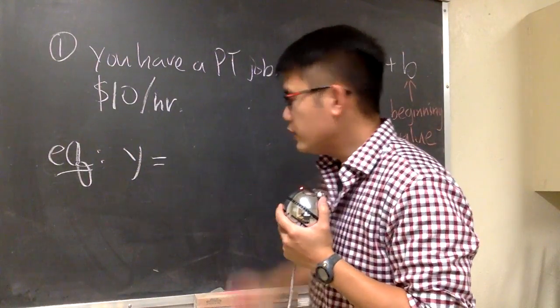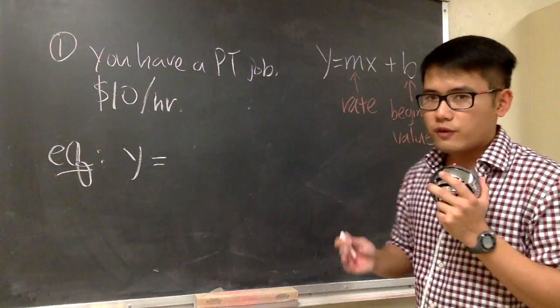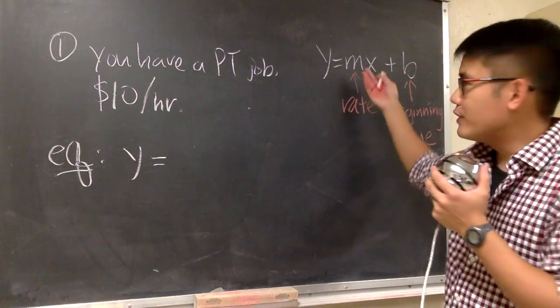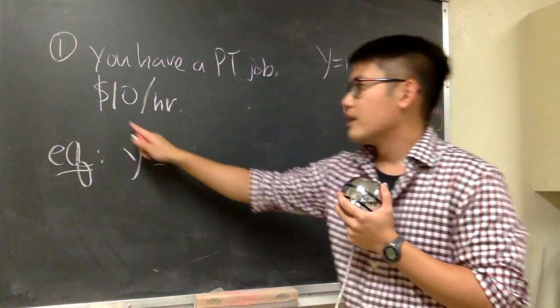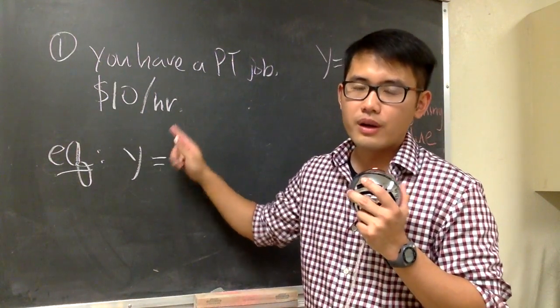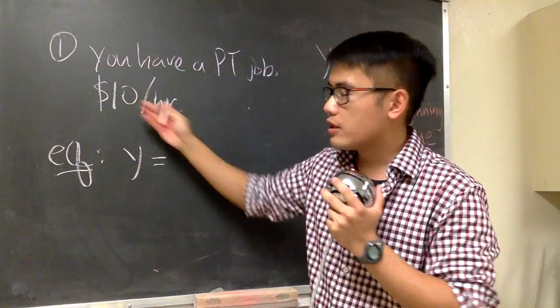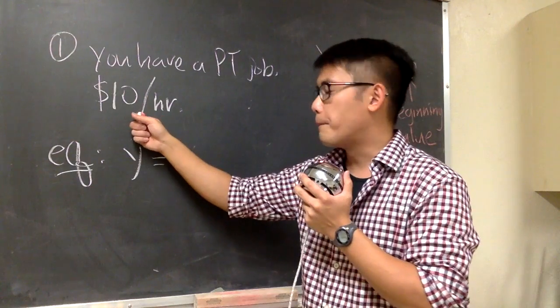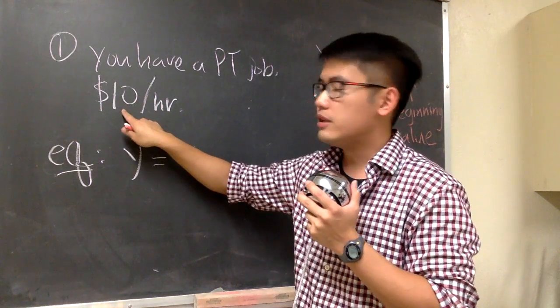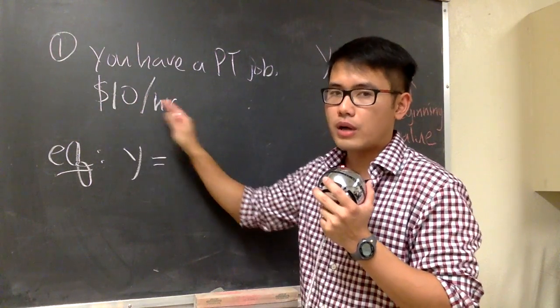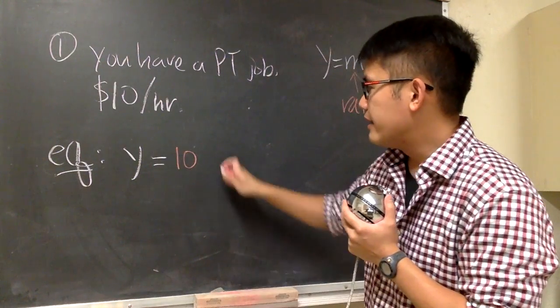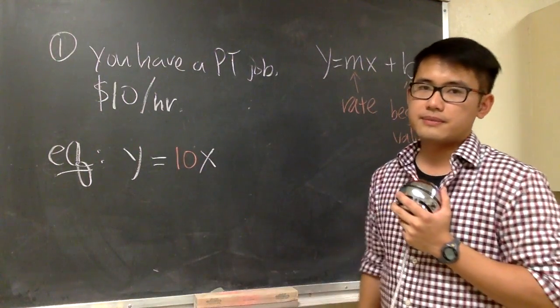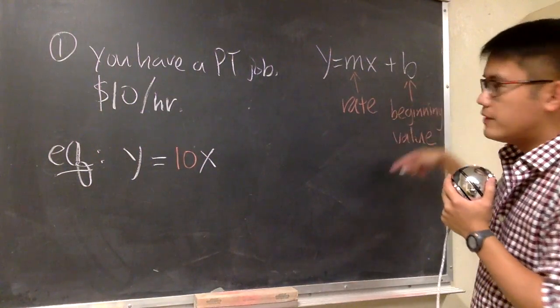First, let me write down y. This is equal to, in order for us to write the equation, we have to have the rate first, right? And what's the rate? $10 per hour. And you see, even though right here I didn't mention the word rate in particular, but whenever you have per hour, this is the rate. $10 per hour. So we know this is 10, and that's the number that goes in front of x. 10x.